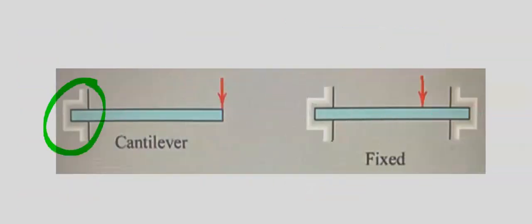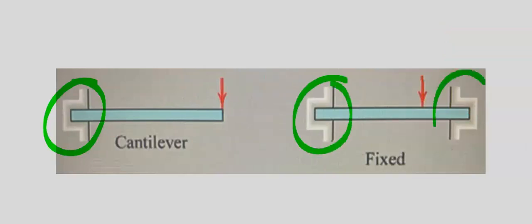A cantilever beam is fixed at one end only, while a fixed beam is fixed at both ends.